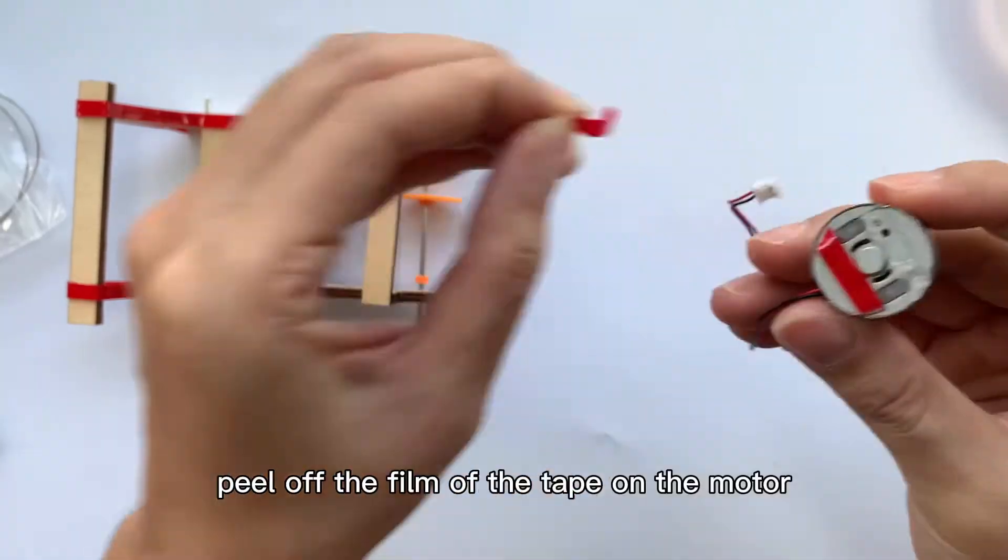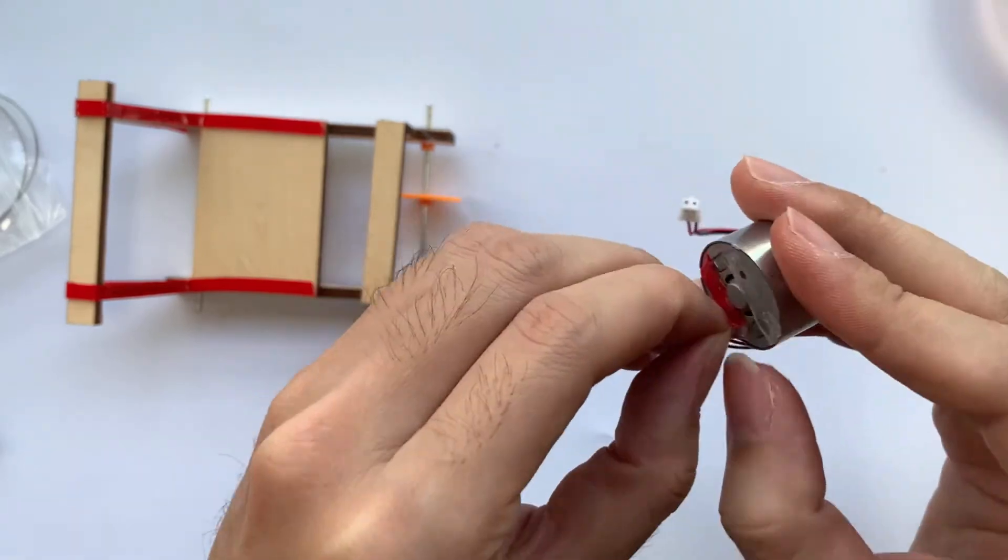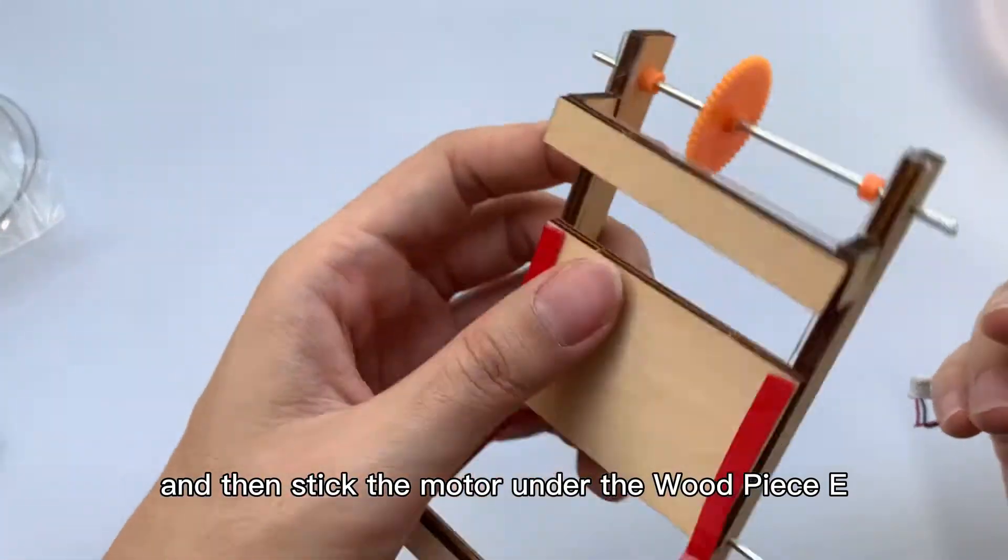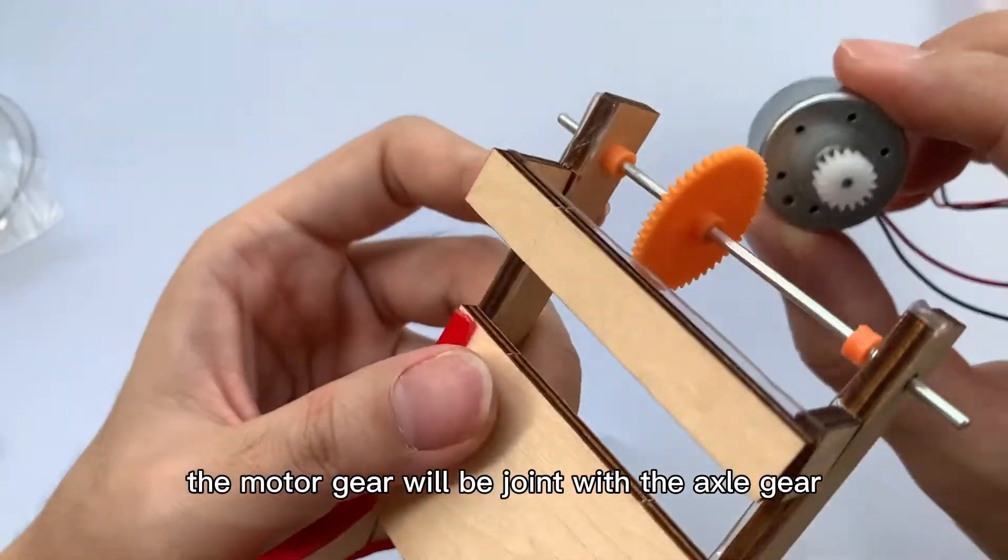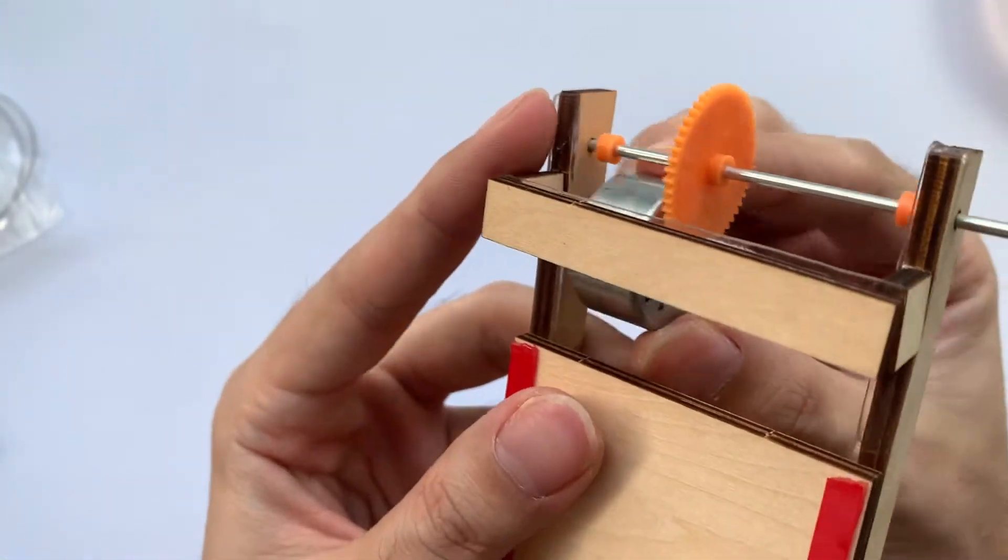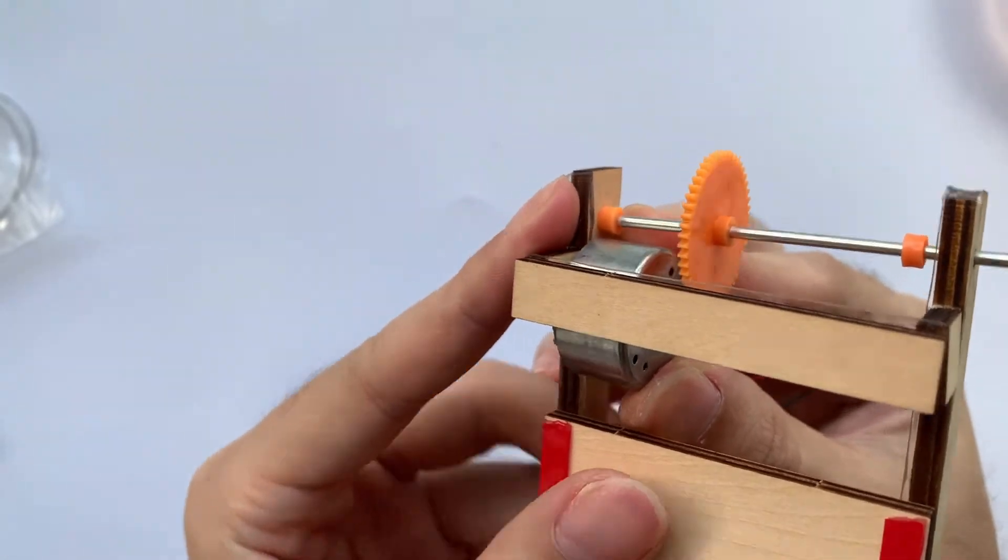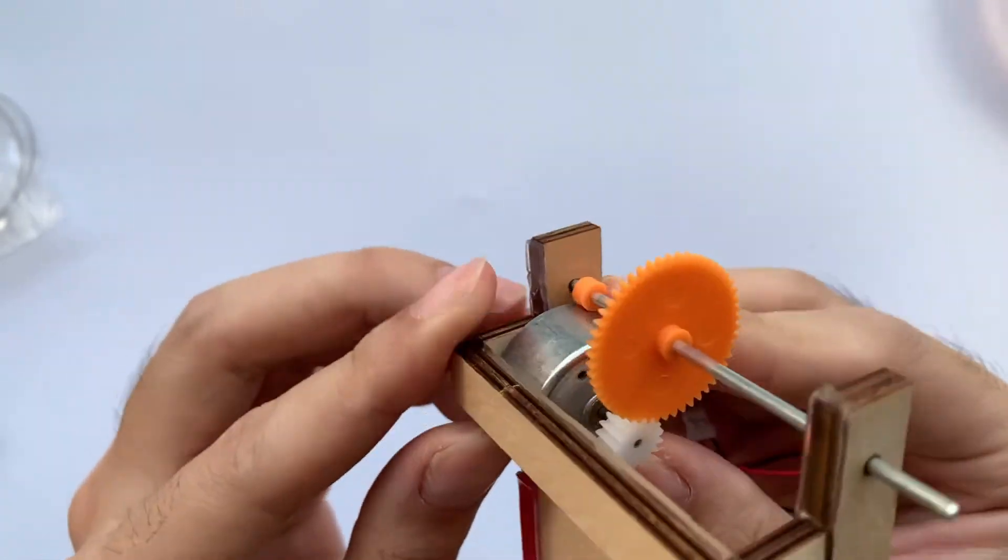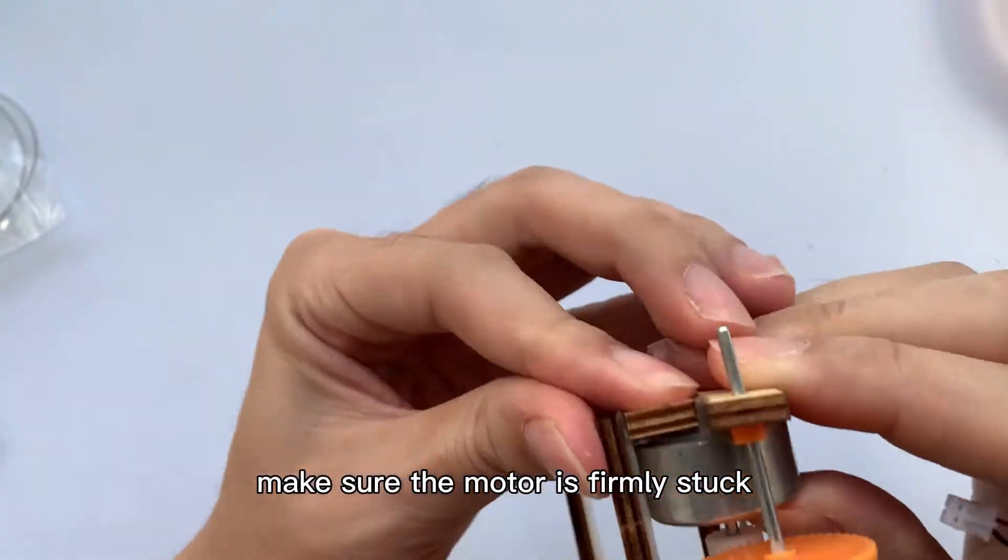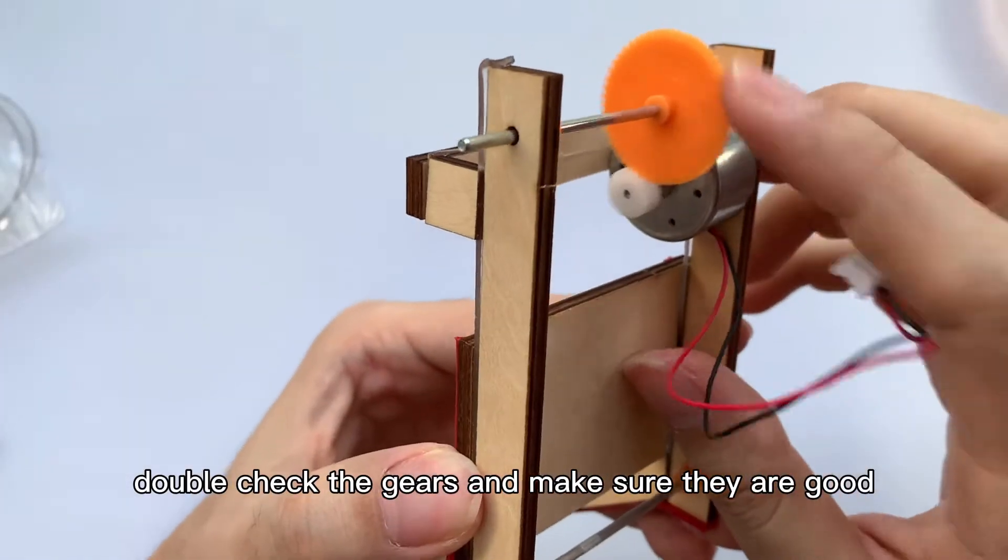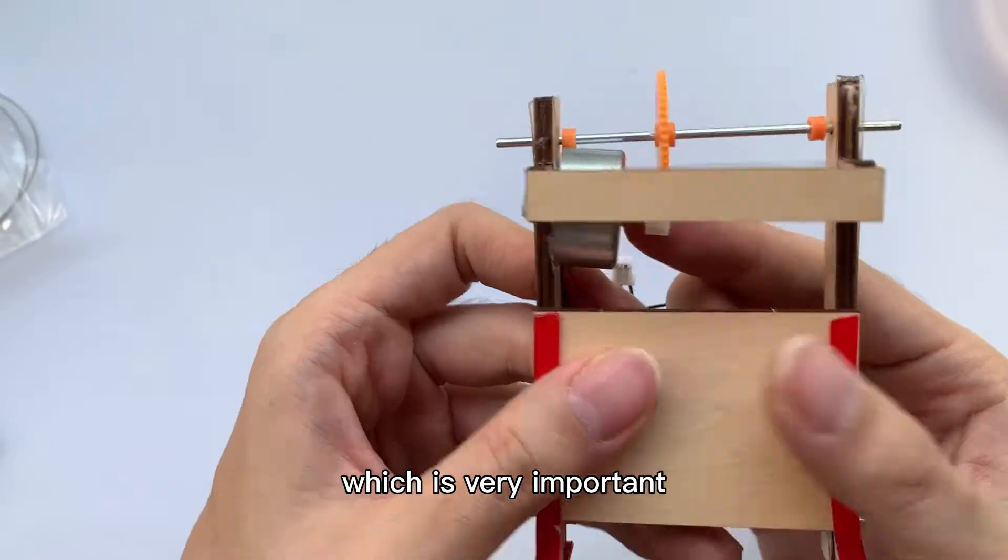Step 13: Peel off the film of the tape on the motor and then stick the motor under the wood piece A2 and D2. Make sure the motor gear will be joined with the axle gear when installing. Test the gears if they are running well. Make sure the motor is firmly stuck. Double check the gears and make sure they are good, which is very important.